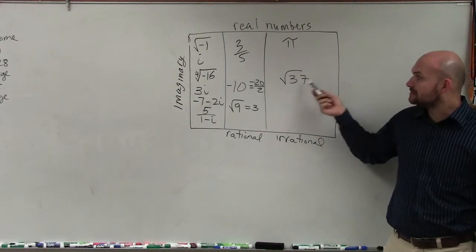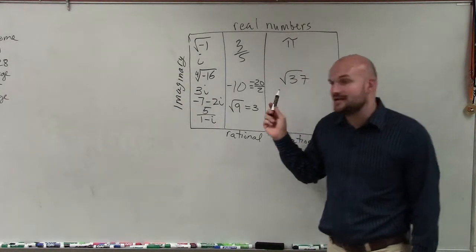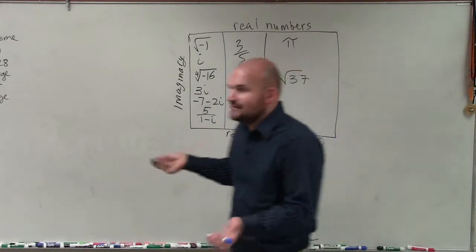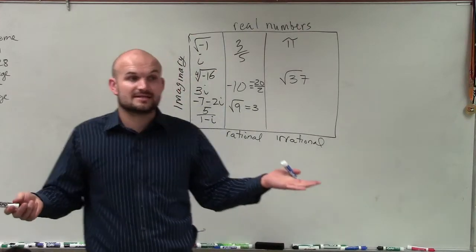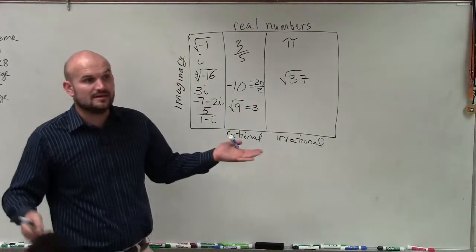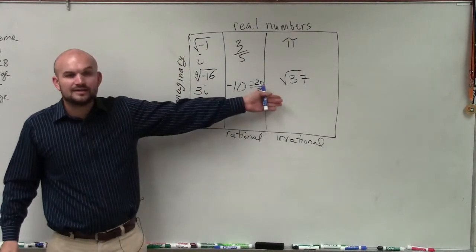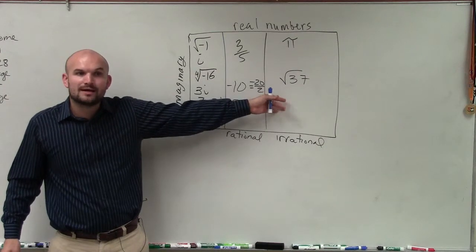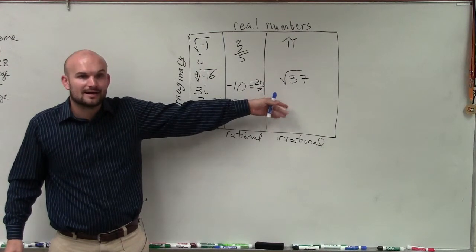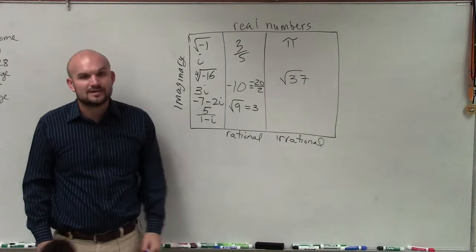Same thing with the square root of 37 — we cannot evaluate it. We know the square root of 36 is 6, but the square root of 37 is not an integer, and therefore it's going to go on and on forever, and therefore it is irrational.